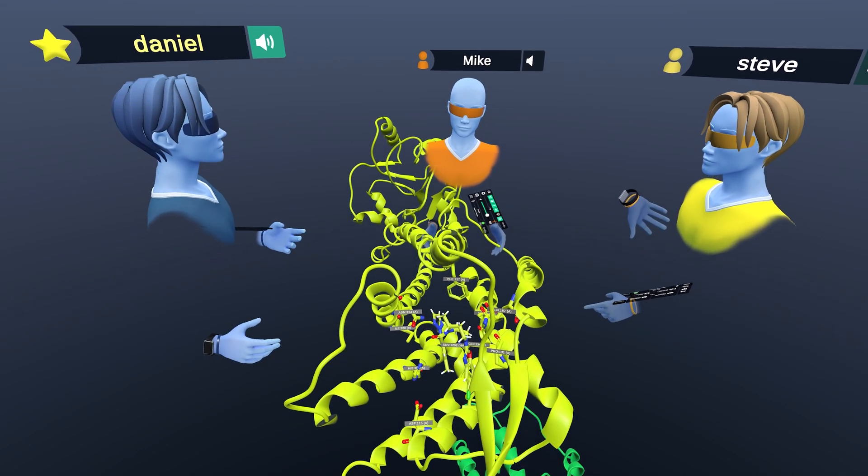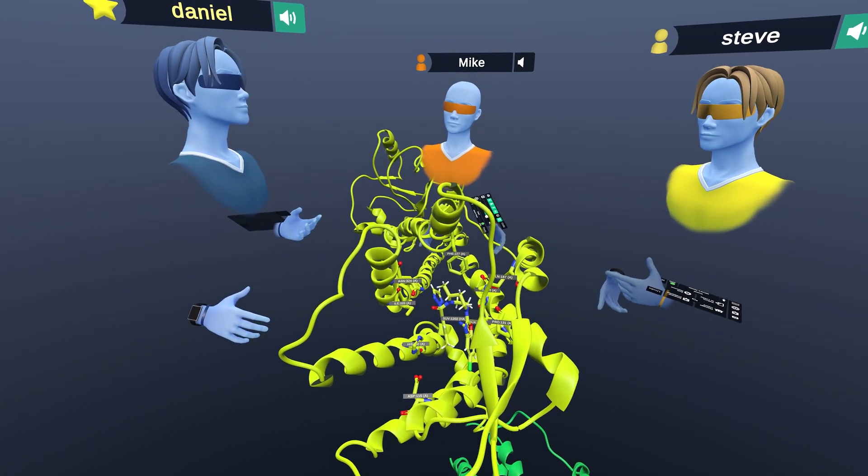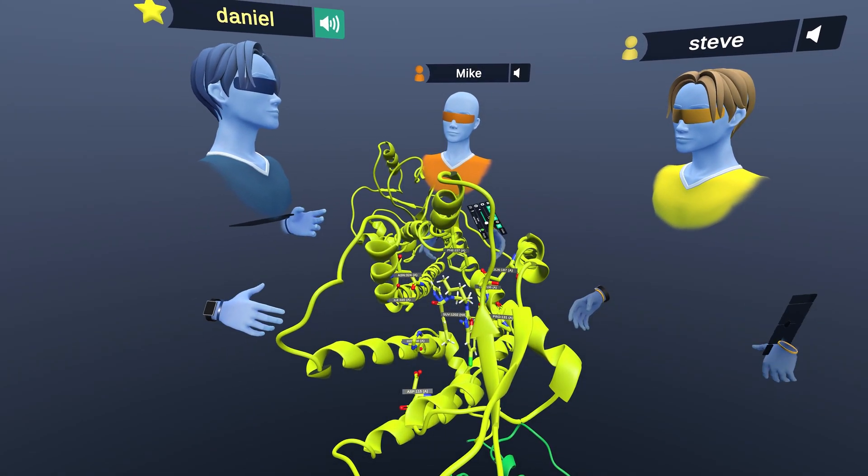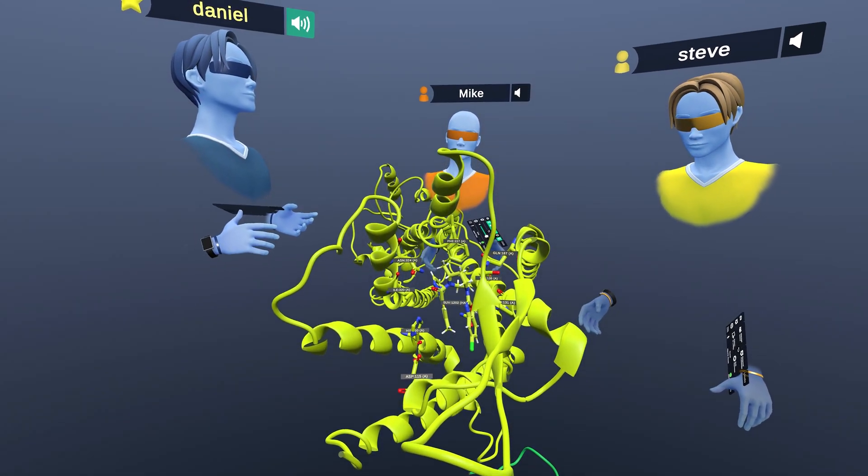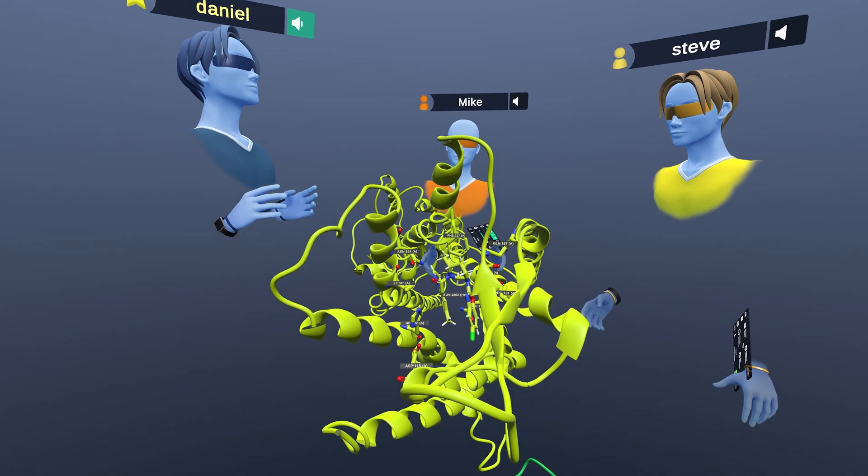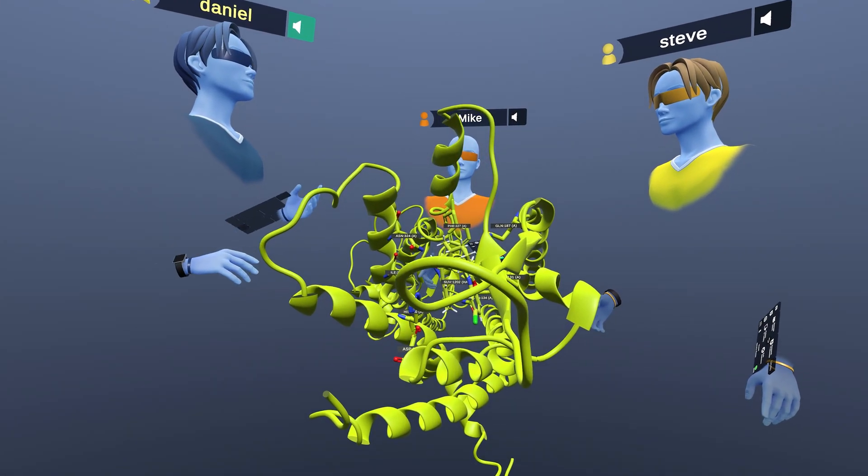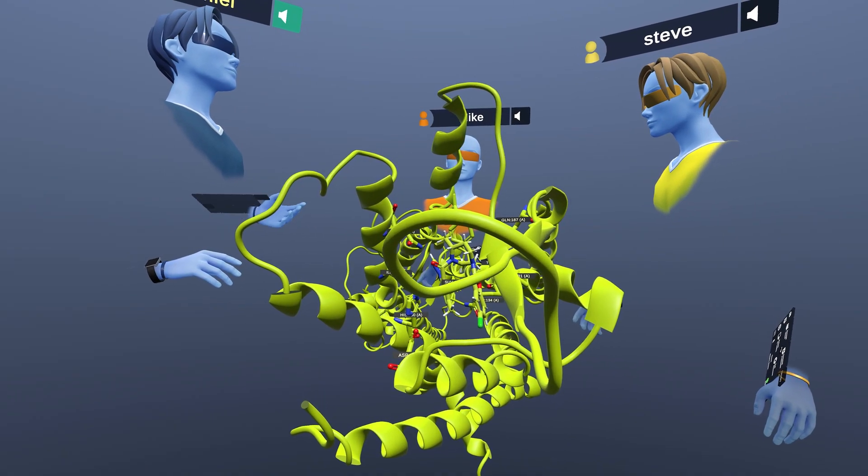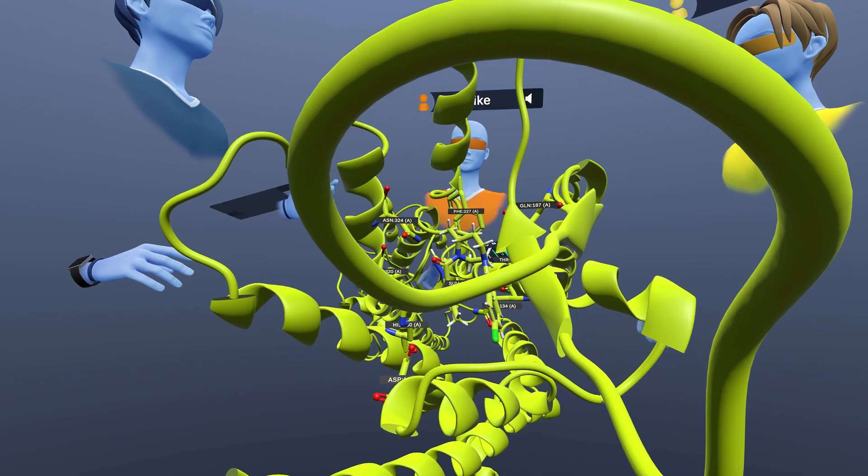So what Heptaris has developed is this platform called STAR, which is Stabilizing Receptors, STAR technology that enables GPCRs to be worked on in solution through some mutations that allows the use of structure-based drug discovery technologies and the discovery of novel drugs, addressing this important set of targets.